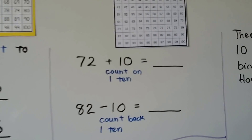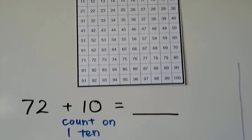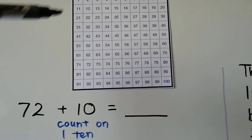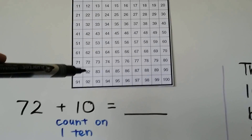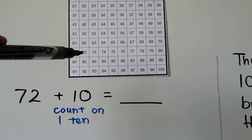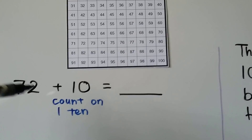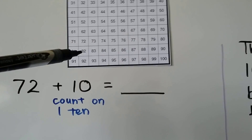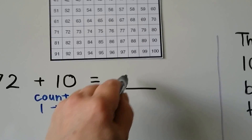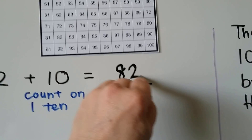Let's try another one. We have 72 plus 10. We can count on one 10 — we find the 72 and count on one 10. Moving one row down gives us 82. So 72 plus one more 10 is 82; that's the sum.